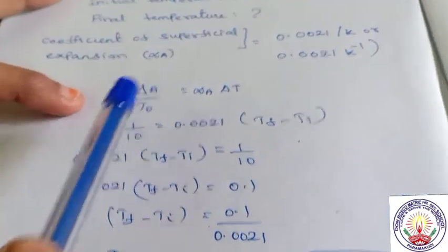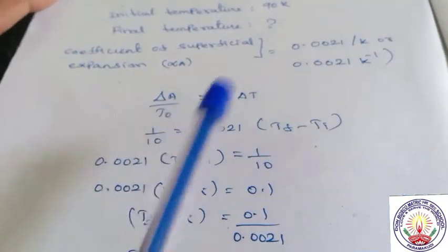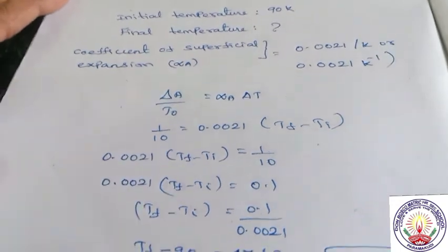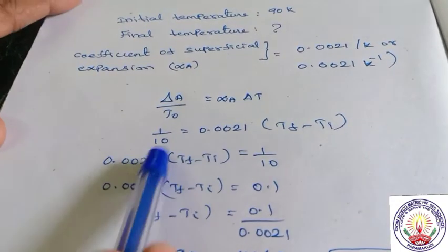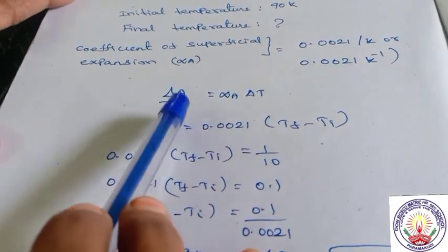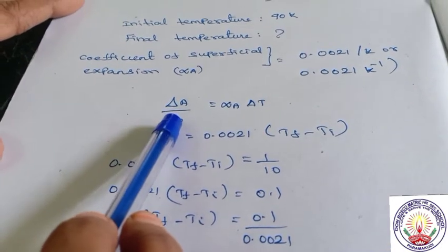Substituting: delta A is 1 and A0 is 10, so delta A by A0 equals 1 by 10, which equals 0.1. The initial temperature T0 is 90 Kelvin.